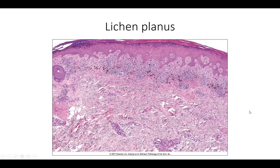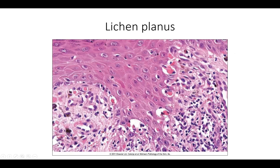Higher power shows degenerating keratinocytes and formation of colloid bodies — very eosinophilic proteinaceous material right along the basement membrane — with interaction with the dense lichenoid lymphocytic inflammation obscuring the basement membrane. It's normal to have some spongiosis overlying lichenoid inflammation, but with such a dense lichenoid pattern, you should be thinking lichenoid inflammatory pattern as opposed to spongiotic change.